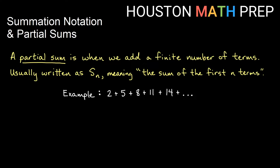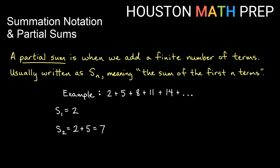Let's look at finding a couple of partial sums. If I wanted to find the sum of the first term only, well that's just 2 — there's nothing to add it to. If I want to find the sum of the first two terms, I add up the first two terms. So S sub 2 means the sum of the first two terms: 2 plus 5 gives us 7. Notice 7 is not in the list — 7 is the result of adding up the first two terms.